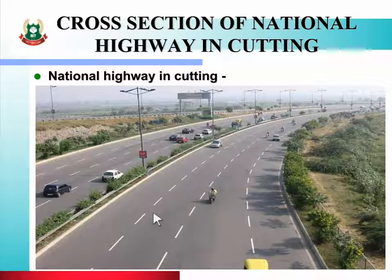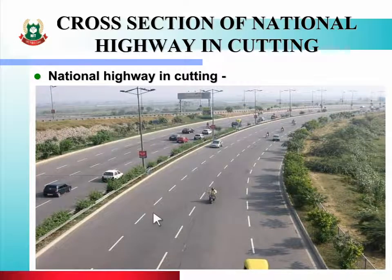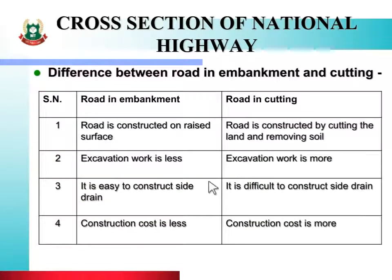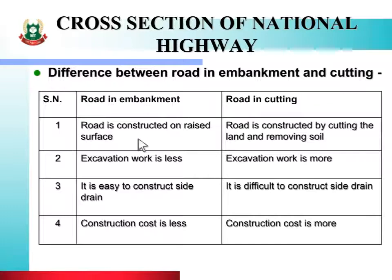In this way, you have now seen the cross section of national highway in embankment and cutting. You must know what differences exist between both sections. Let us see the difference between road in embankment and cutting. See the table in which you will see the differences. The first point is: in embankment, road is constructed on a raised surface, while in cutting, road is constructed by cutting the land and removing soil. Embankment road is constructed in the upward direction.